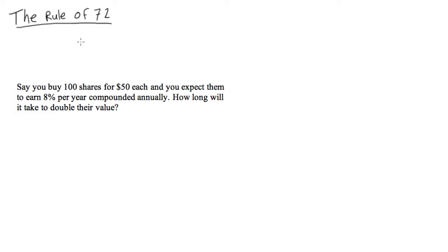So the rule of 72 is a quick way to figure out how long it will take you to double your money if you invest with compound interest.